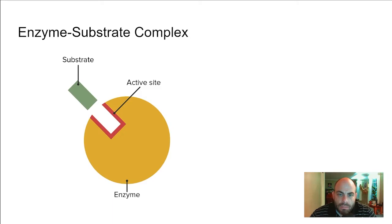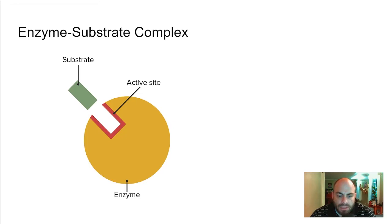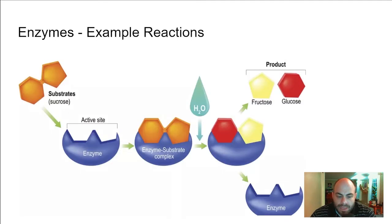The substrate binds to the enzyme — the enzyme is like a tool. Just like a wrench binds to the bolt you're trying to loosen, when you lift the wrench the bolt has been changed — tightened or loosened — and the wrench is unchanged, able to go do another job. Similarly, the substrate is being changed as a result of the reaction, and the enzyme is then able to go do more work.